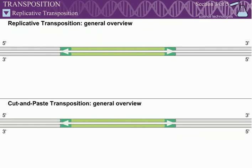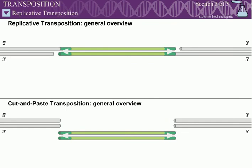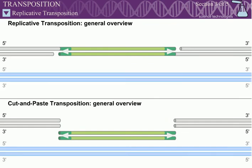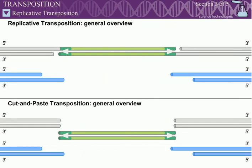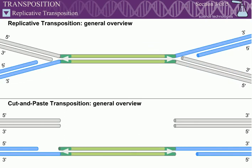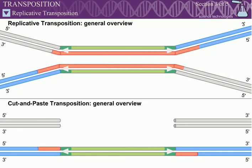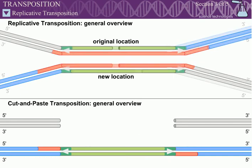Some transposons move by a replicative mechanism. Although the outcome is different, the mechanism of strand transfer in replicative transposition is very similar to that of cut-and-paste transposition. However, the transposon DNA is duplicated during transposition, leading to two copies of the transposon joined to the new and old DNA target sites.